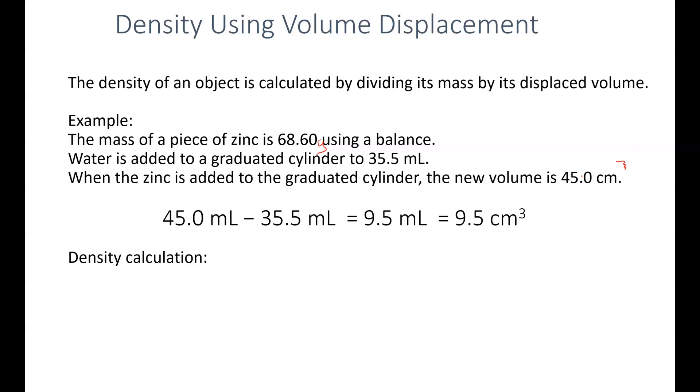I can take my final volume—the 45.0—and subtract the 35.5, because the new volume that's been added is from the zinc. That zinc has added 9.5 milliliters to that volume, which would give me a volume of 9.5 cubic centimeters or 9.5 milliliters. Remember, these are interchangeable.